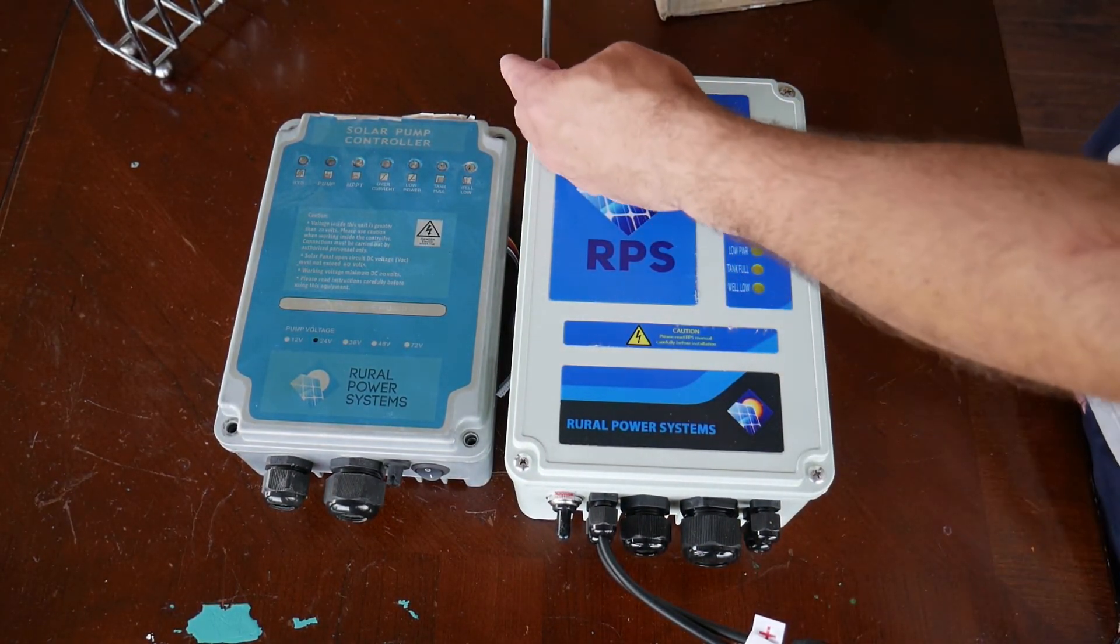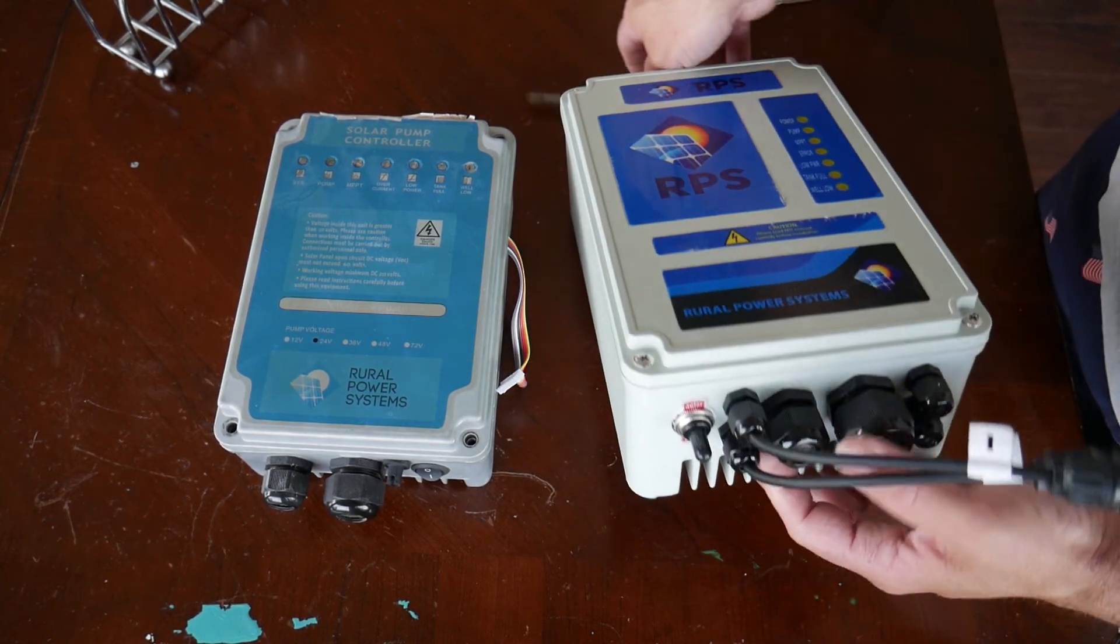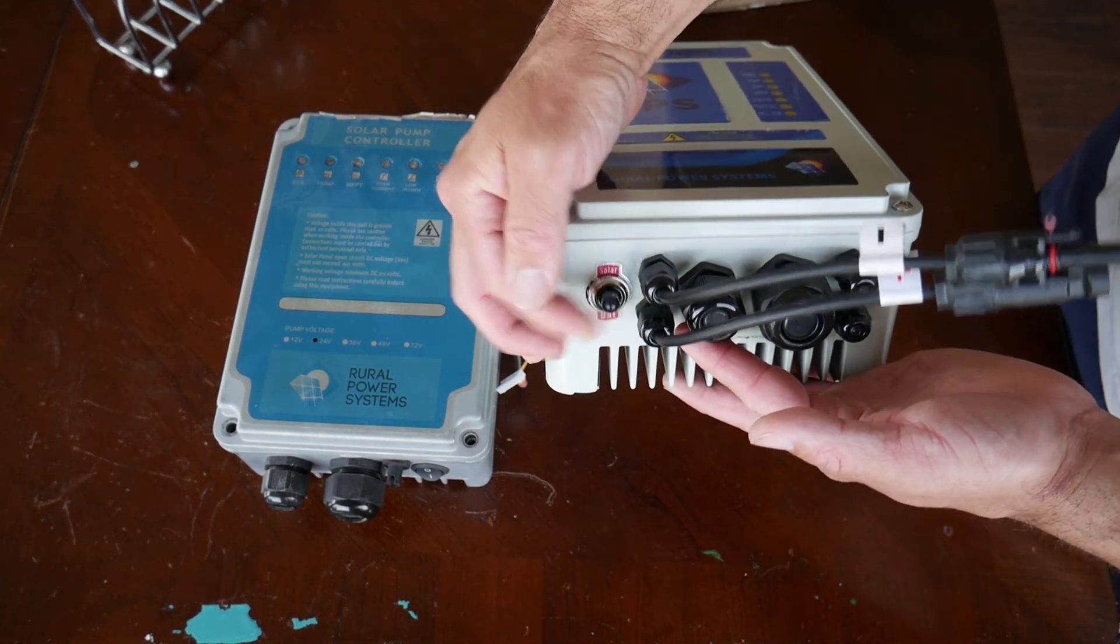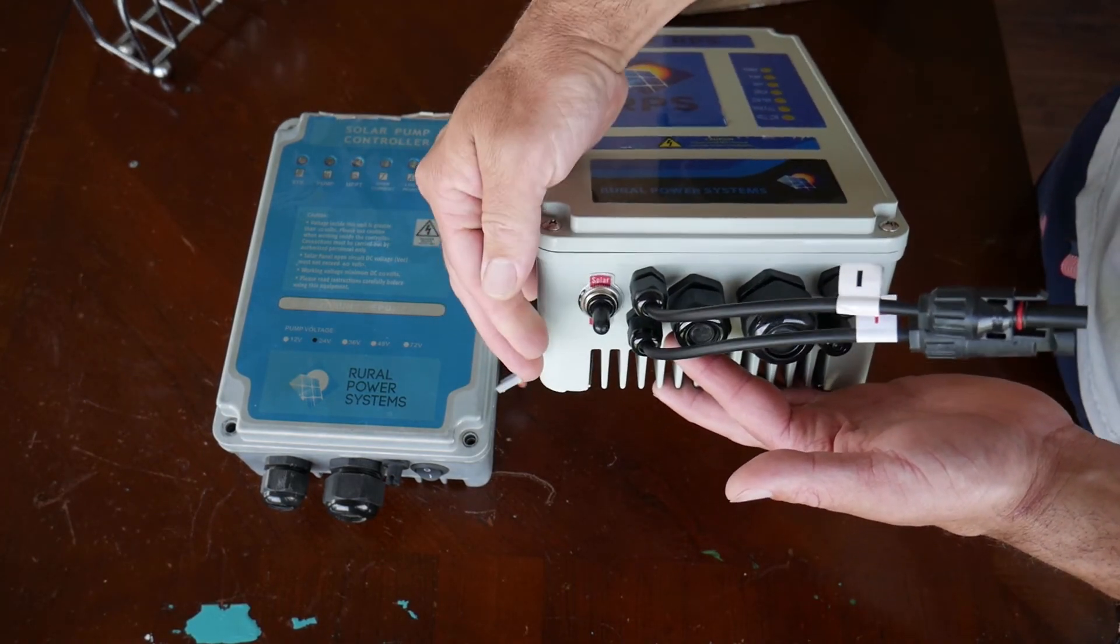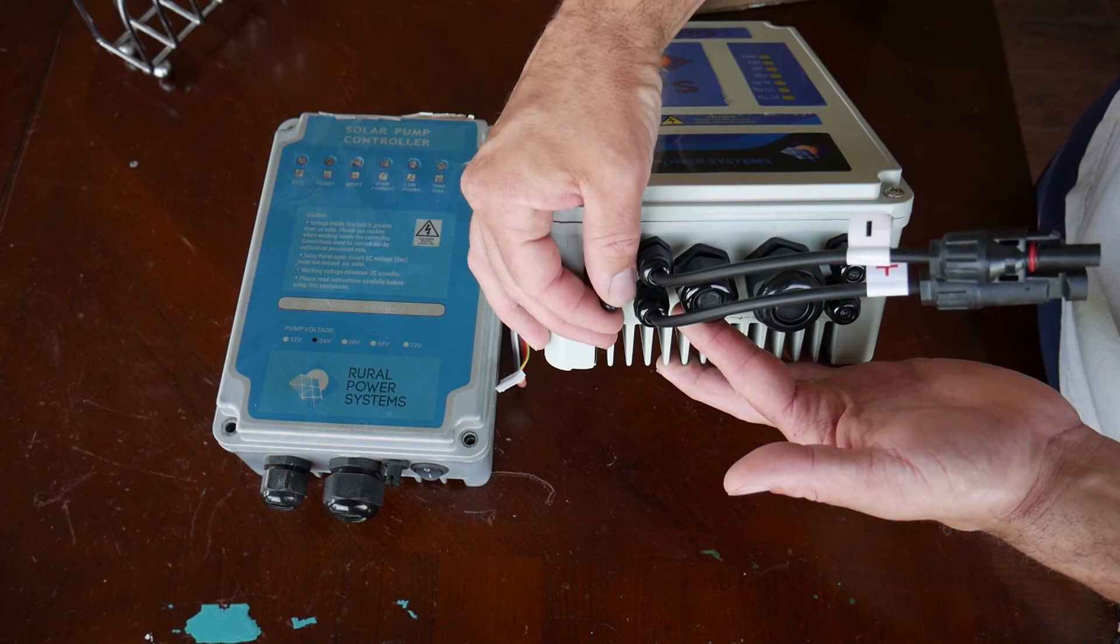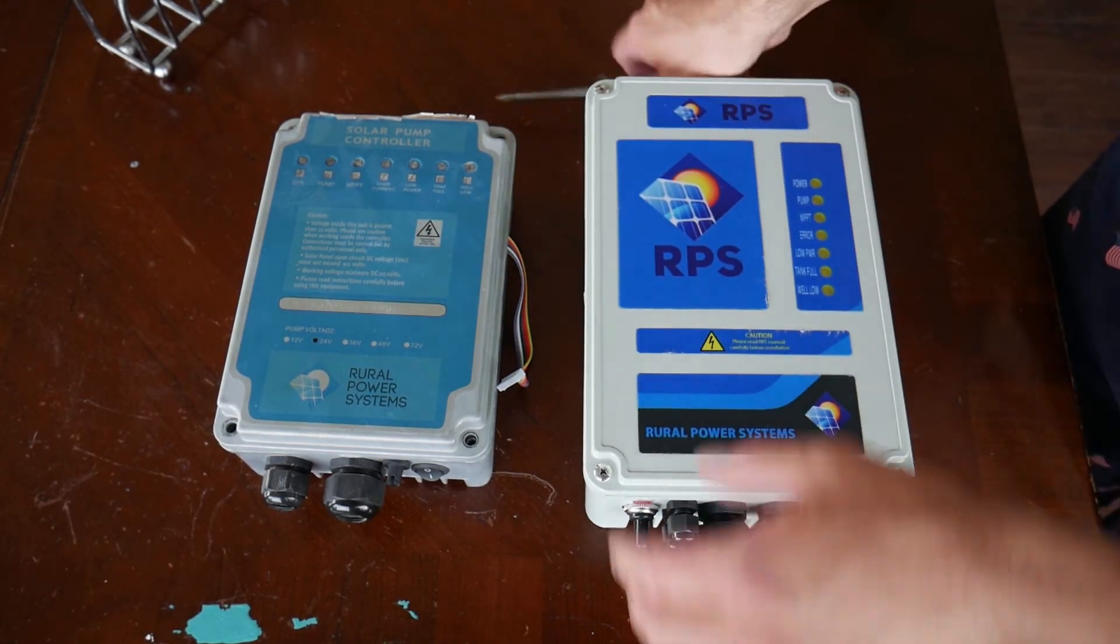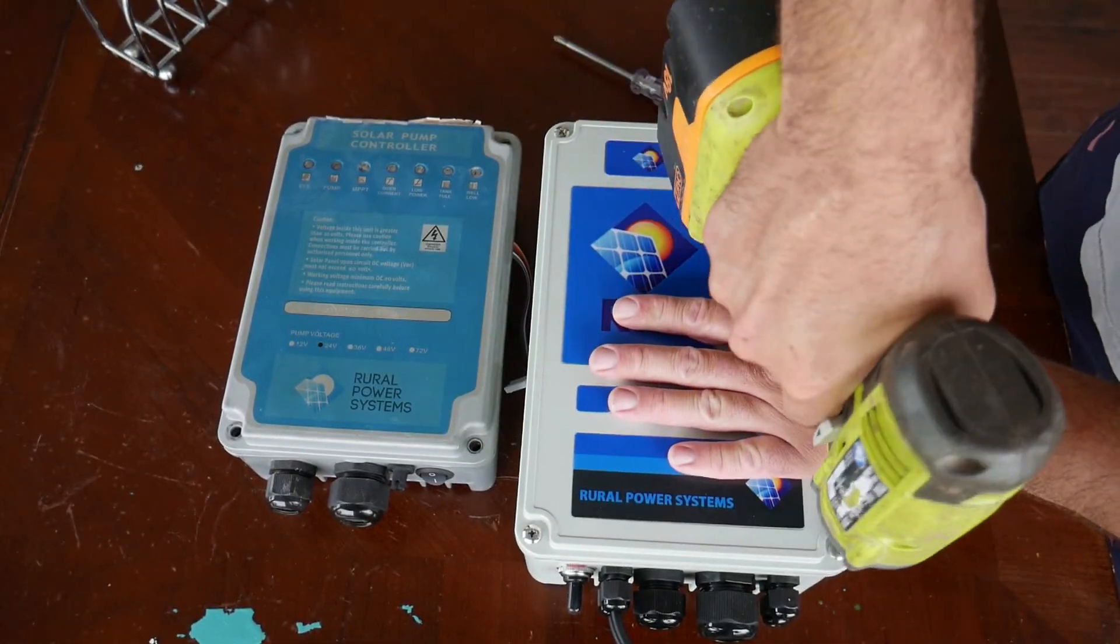The LEDs have been moved to a new position on the front of the box, and there is now an external toggle switch to switch between solar and battery, as well as more weatherproof wire access holes. Now let's crack this thing open.